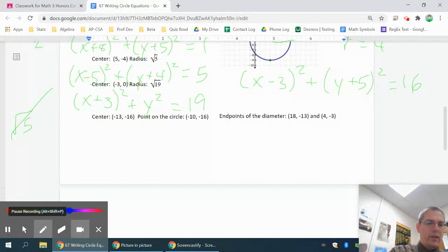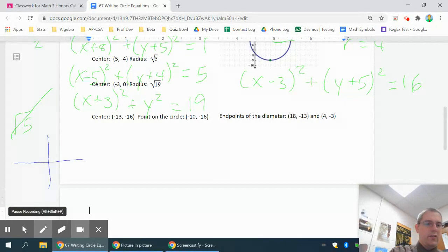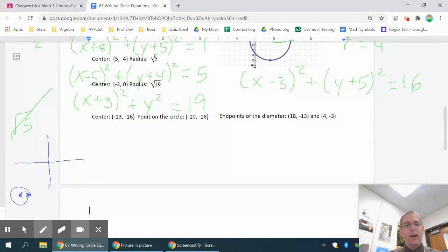On these, they give you a center and a point. So I think it's going to be helpful to sketch a graph. It doesn't have to be exact, but negative 13, negative 16 is over a lot and down even more. So maybe about there. And then you have negative 10, negative 16, so over almost that much and then down the same amount. So this is the center and this is a point on the circle. So the actual circle would look something like that going across the center.